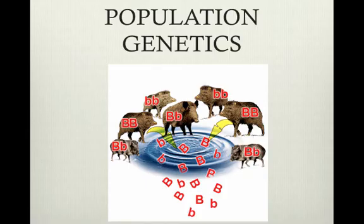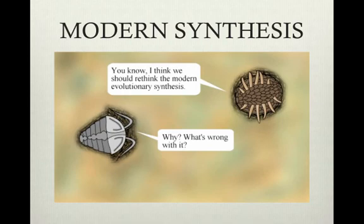Population genetics explains variation at the population level and provides a basis for natural selection and other evolutionary forces. It combines evolution and genetics. Population genetics is part of modern synthesis, which is the marriage of genetics and the theory of evolution that explains the genetic basis of variation and natural selection. Modern synthesis is a comprehensive theory of evolution.